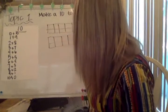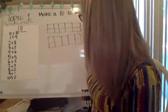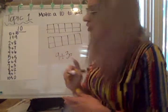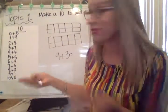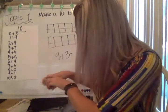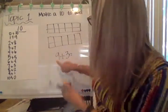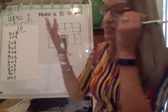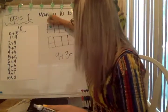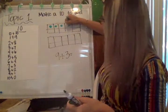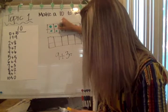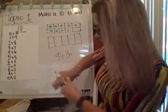If your first problem said to make a 10 to add and your equation is nine plus three — well, in your head, something that you know is that nine needs one more to get to the next 10. The first step is thinking: I know what nine looks like on a 10 frame. So I'm going to put in my nine dots. Remember, you fill in the top row, then you fill in the bottom row. There's my nine.